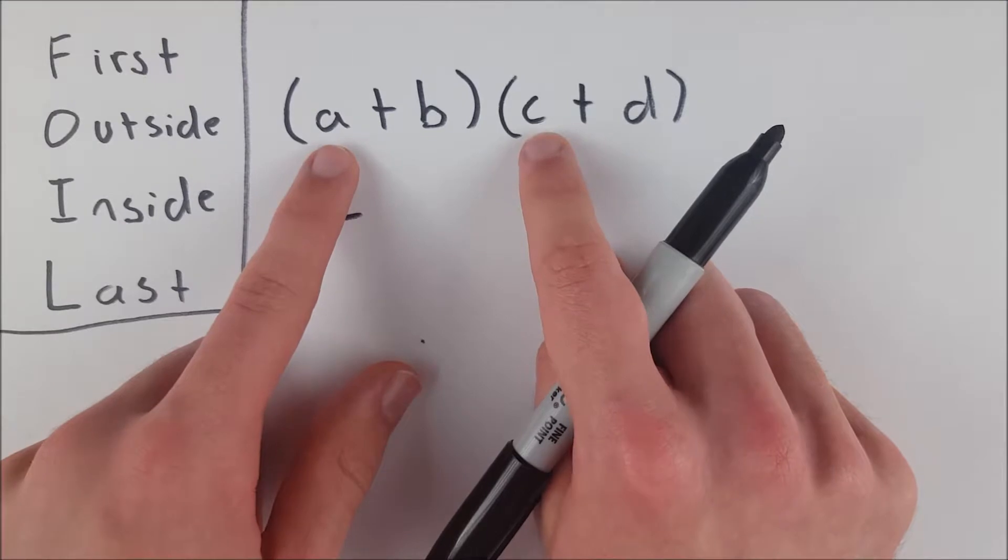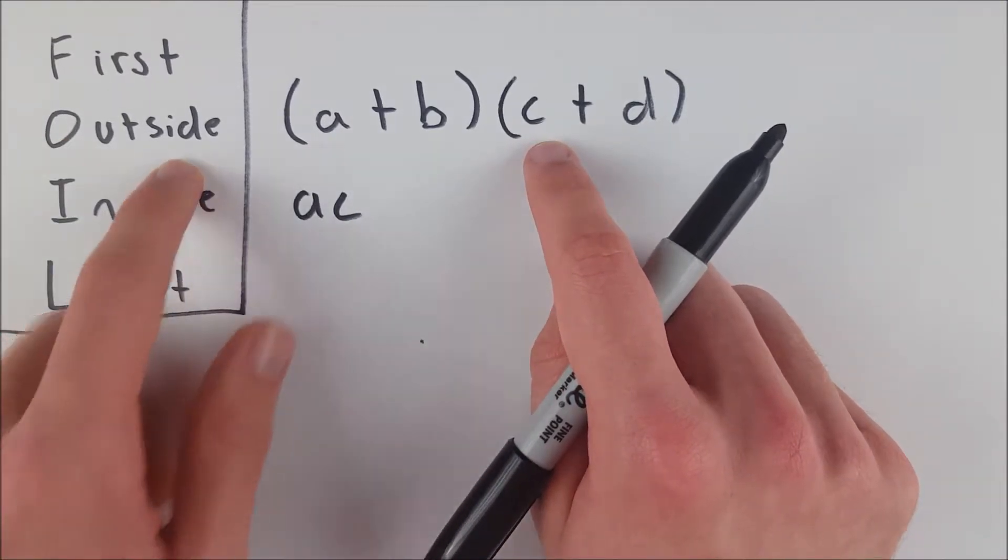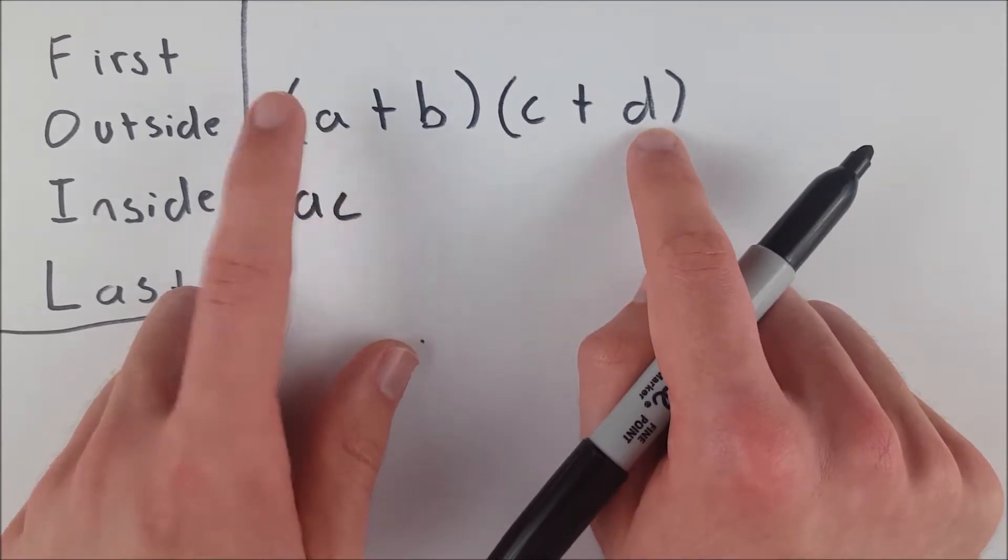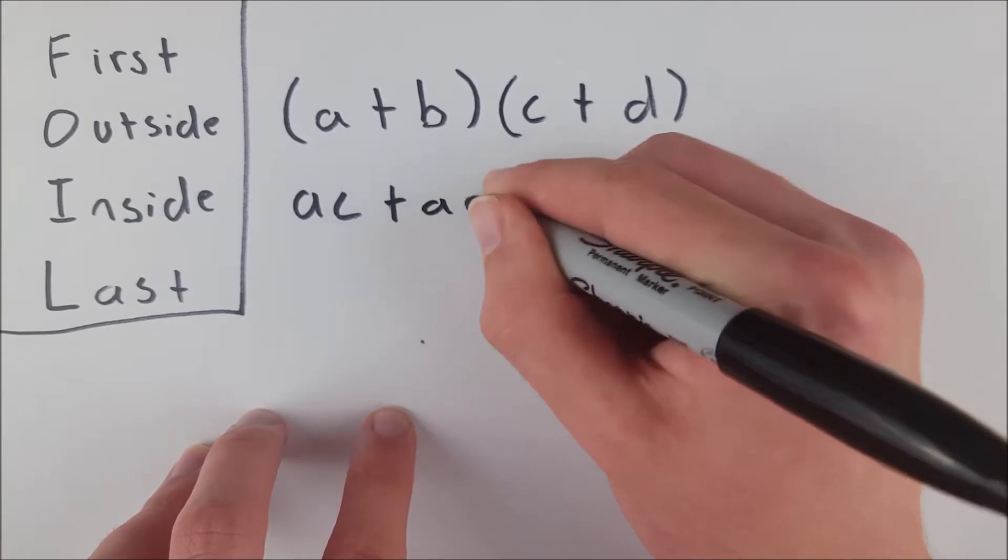And again, that's multiplying our first terms together. Then we have Outside as the next step. So we multiply our outside terms together, a and d. That gives us a times d.